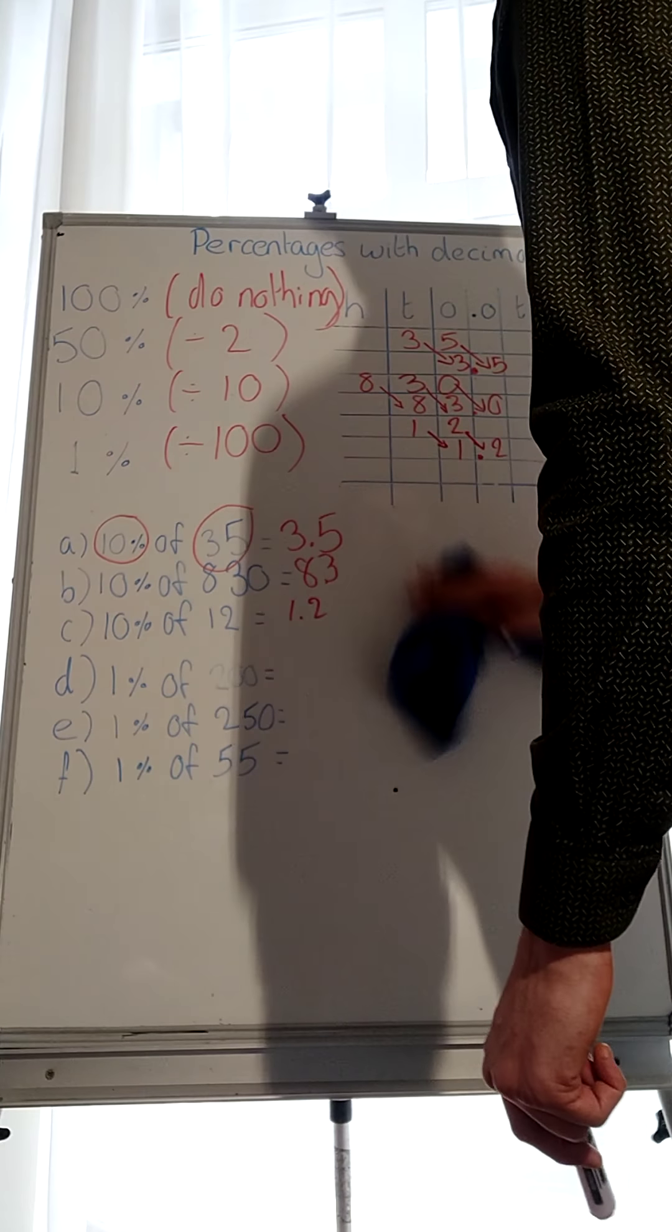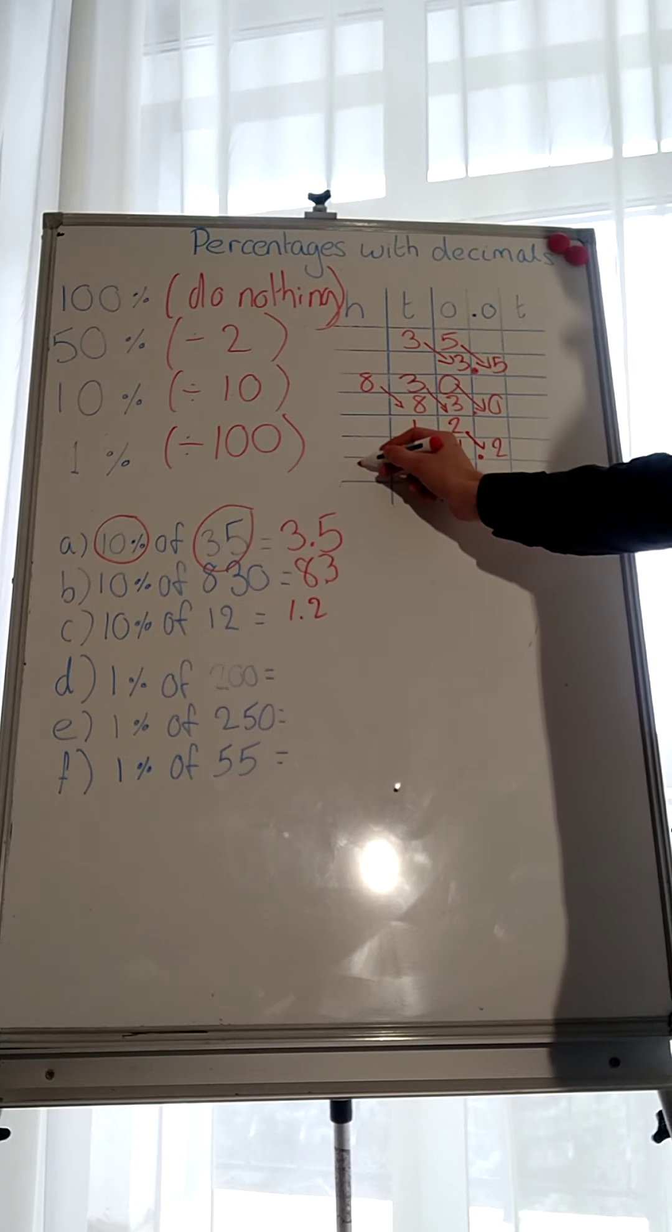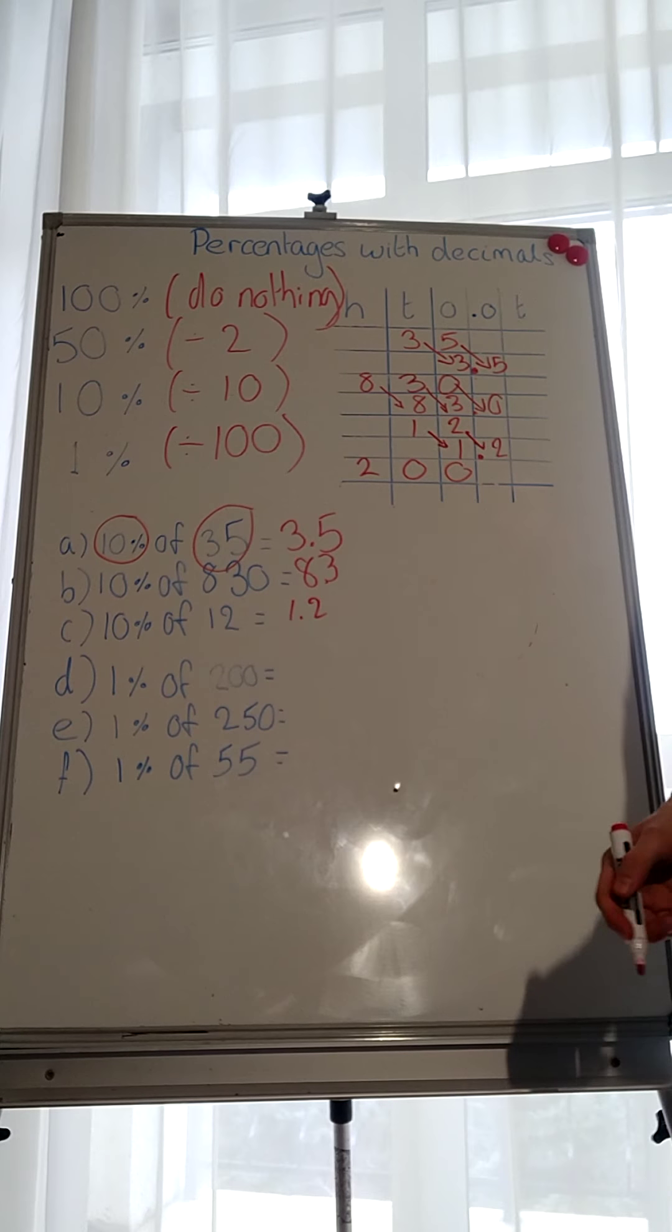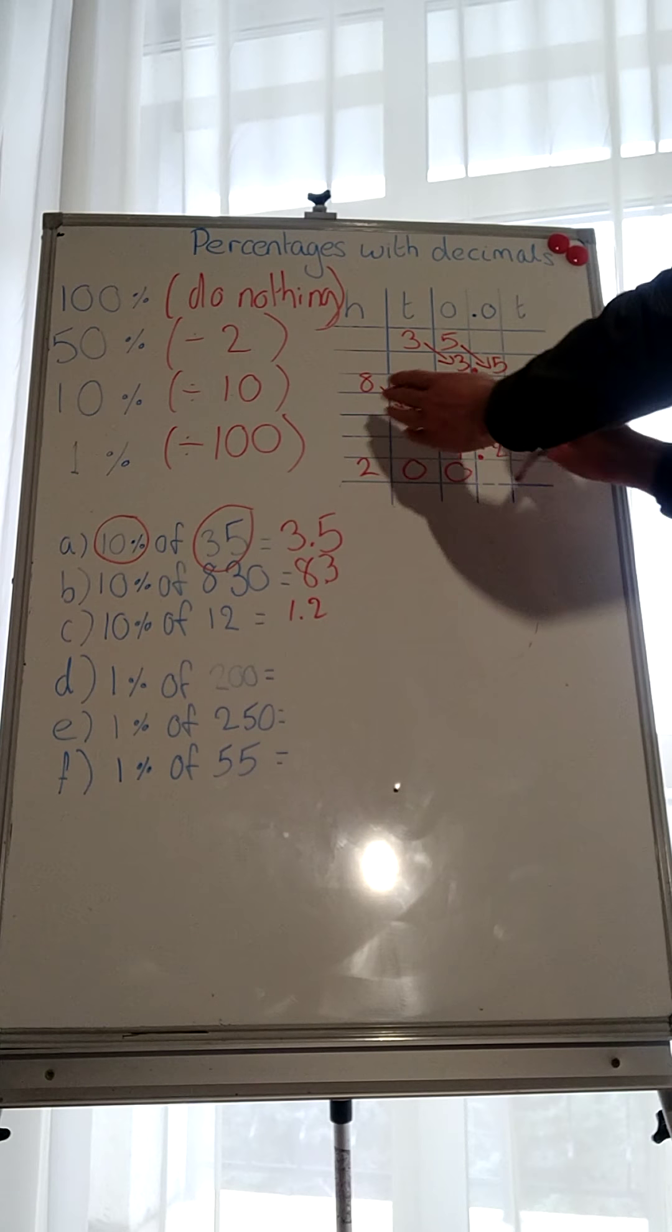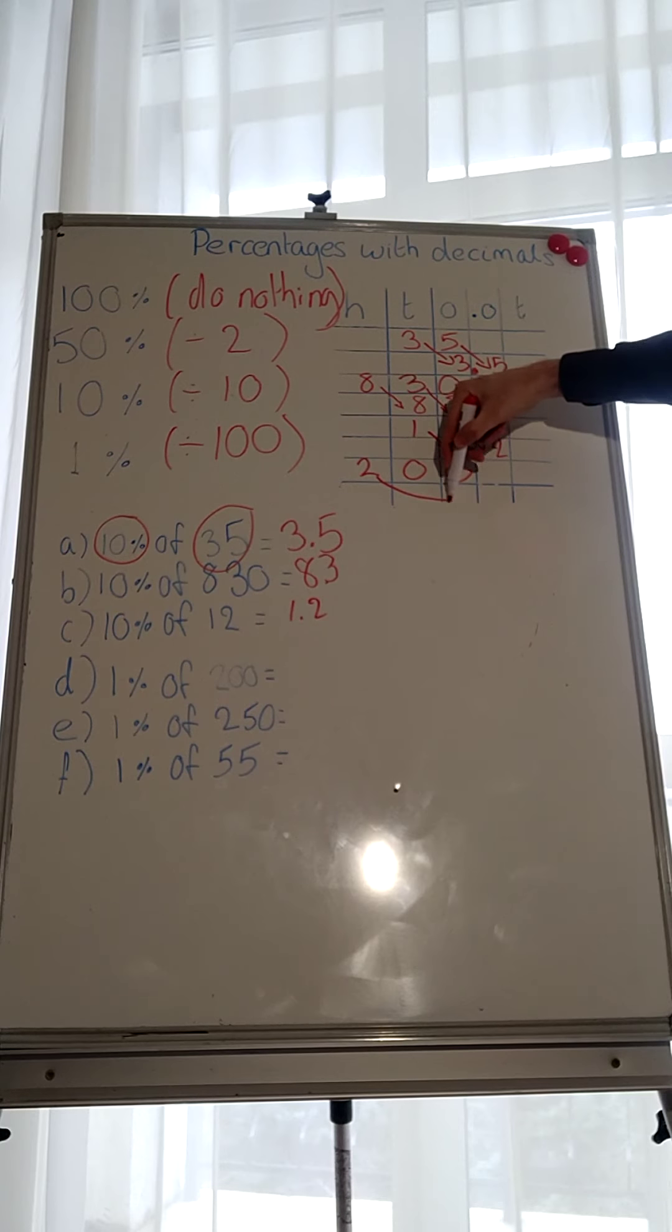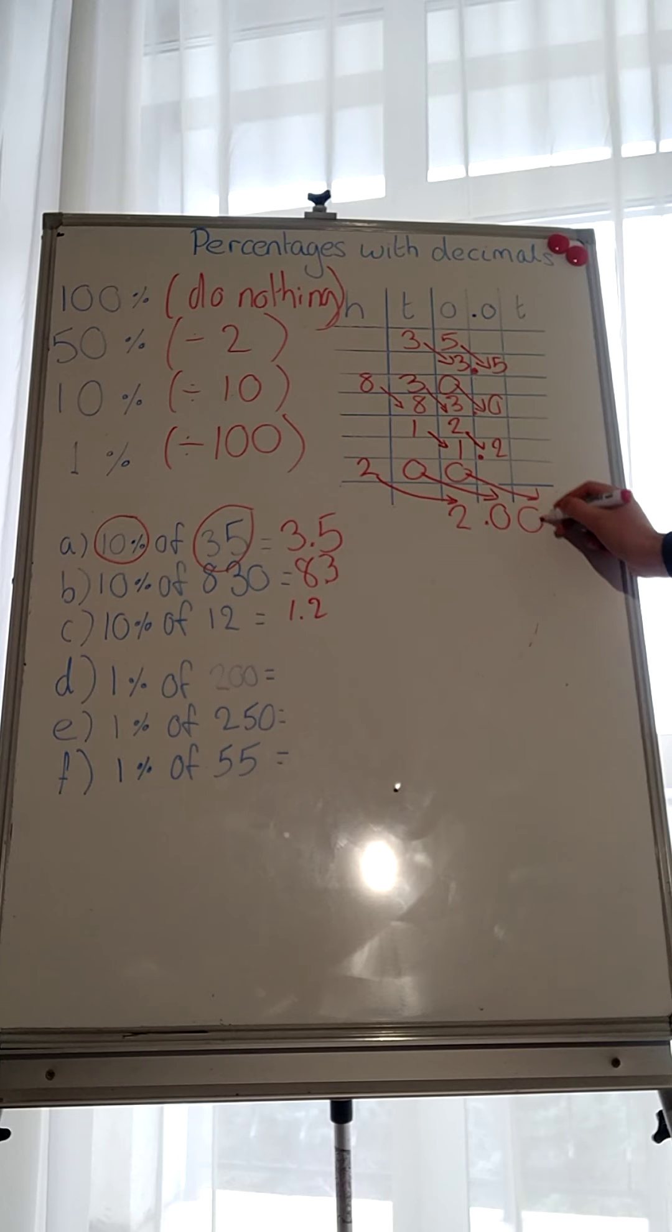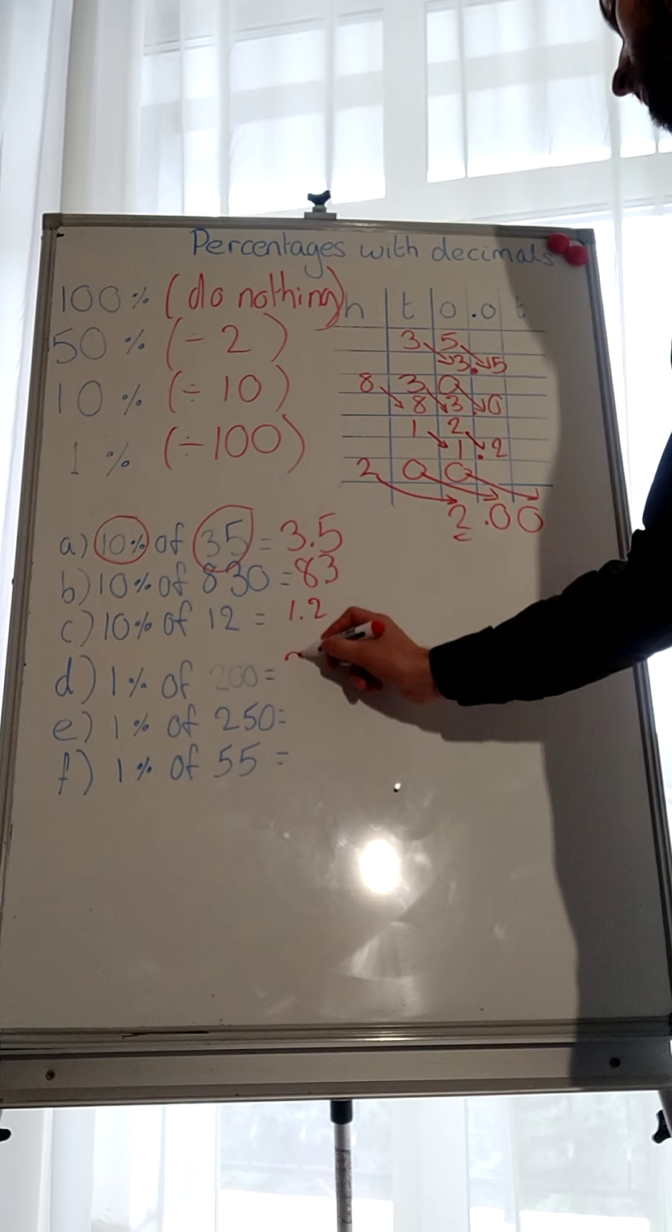Now let's look at calculating 1%. So 1% of 200. Let's move it in here. 2, 0, 0. Now, when we're doing 1%, we divide by what? We divide it by 100. So think about how many places are we going to move it. We're going to move it 2 to the right. So we're dividing by 100, which gives us 2.00. So the whole number is 2. Answer 2.